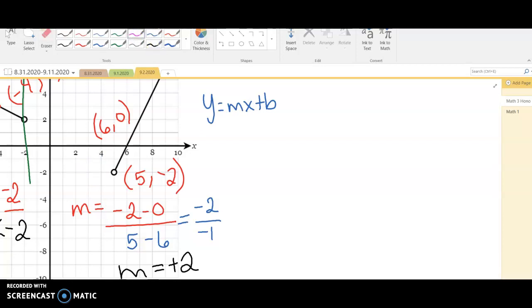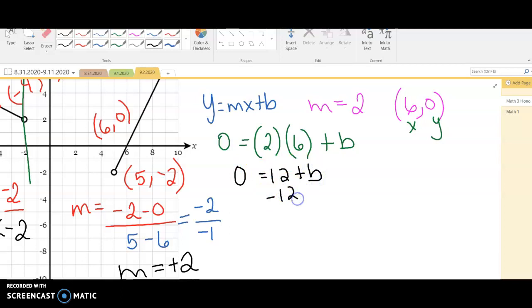So we're going to plug our information into this equation. So we got m = 2. And I'm going to use a coordinate. Any coordinate works. I'm going to use (6, 0), just because I like working with 0. Sometimes it makes my life easier. Our y is 0. My slope, we said, was 2. And my x is 6. And we're trying to find the y-intercept. So we got 0 = 12 + b. Subtract 12 on both sides because I'm solving for b. We got -12 equals b. So what's my b? -12.